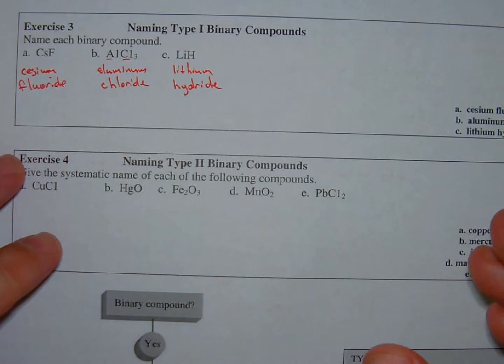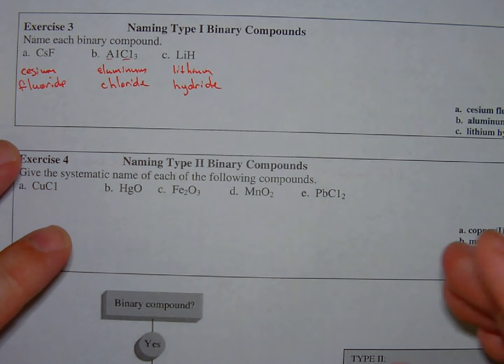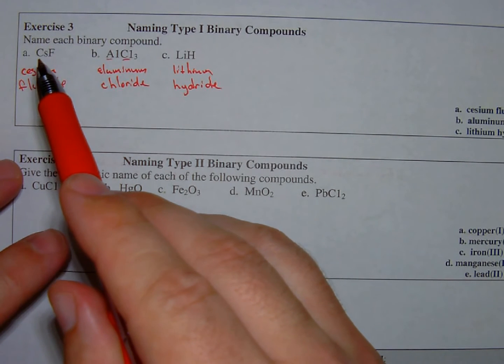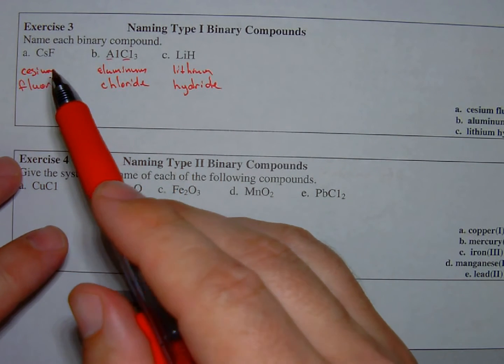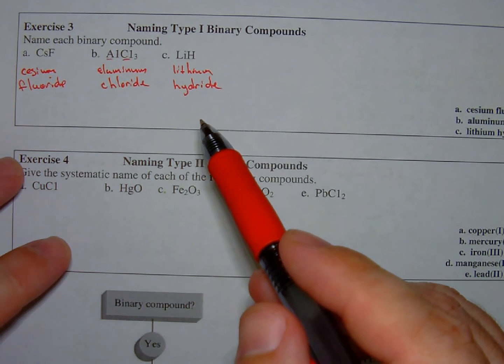Notice I do not have to use any of the prefixes like di, mono, tri, because these contain a positive charge and a negative charge. And for ionic compounds, the algebraic sum of the charges must be zero.